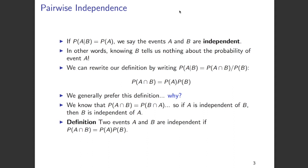We can now use this to rewrite the definition of probability of A given B. If A and B are independent, probability of A given B is going to be probability of A. Using the definition of conditional probability, we end up with: probability of A intersection B is equal to probability of A times probability of B. This is a very useful formula, and whenever we have this condition, we can say that A and B are independent of one another.